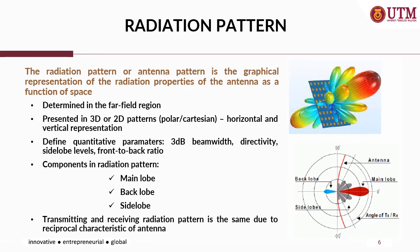The first antenna parameter we are going to discuss is the radiation pattern. The radiation pattern is basically the representation of the radiation properties of the antenna as a function of space. This is a graphical representation in which we may see the maximum radiation towards the intended direction — in this case, the maximum radiation is presented by the red color pointing upward. There are additional components: side loops or minor loops, and also back loops.